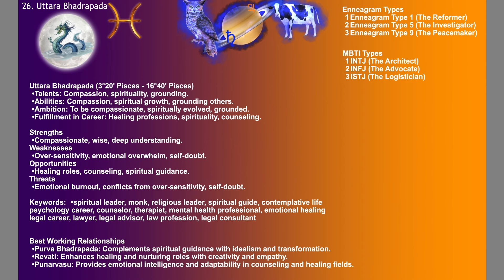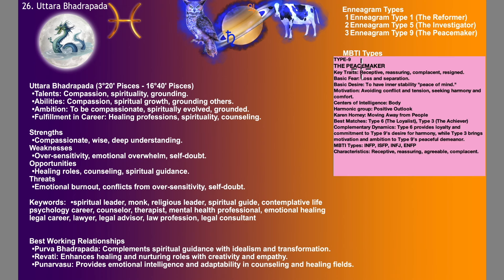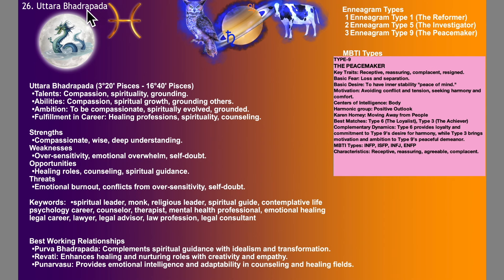The last Enneagram type match is type 9, the Peacemaker — receptive, reassuring, complacent and resigned. Their basic desire is to have inner stability and peace of mind. Motivation is to avoid conflict and tension, and seek harmony and comfort. Centres of intelligence is the body, moving away from people. Psychology careers — counsellors, psychiatrists, therapists, mental health professionals, emotional health professionals — that kind of profession would be good for the type 9 Enneagram who matches Uttarabhadrapada as the 10th lord.